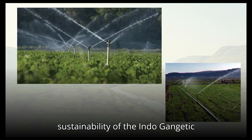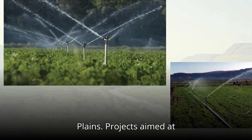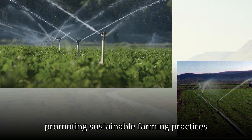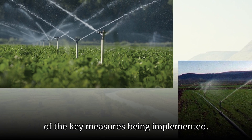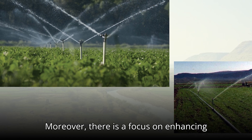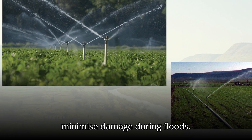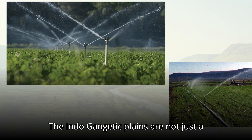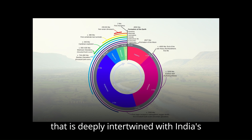The government and various organizations have been working towards improving the environmental sustainability of the Indo-Gangetic Plains. Projects aimed at improving irrigation techniques, promoting sustainable farming practices, and controlling urban expansion are some of the key measures being implemented. Moreover, there is a focus on enhancing flood management infrastructure to minimize damage during floods.